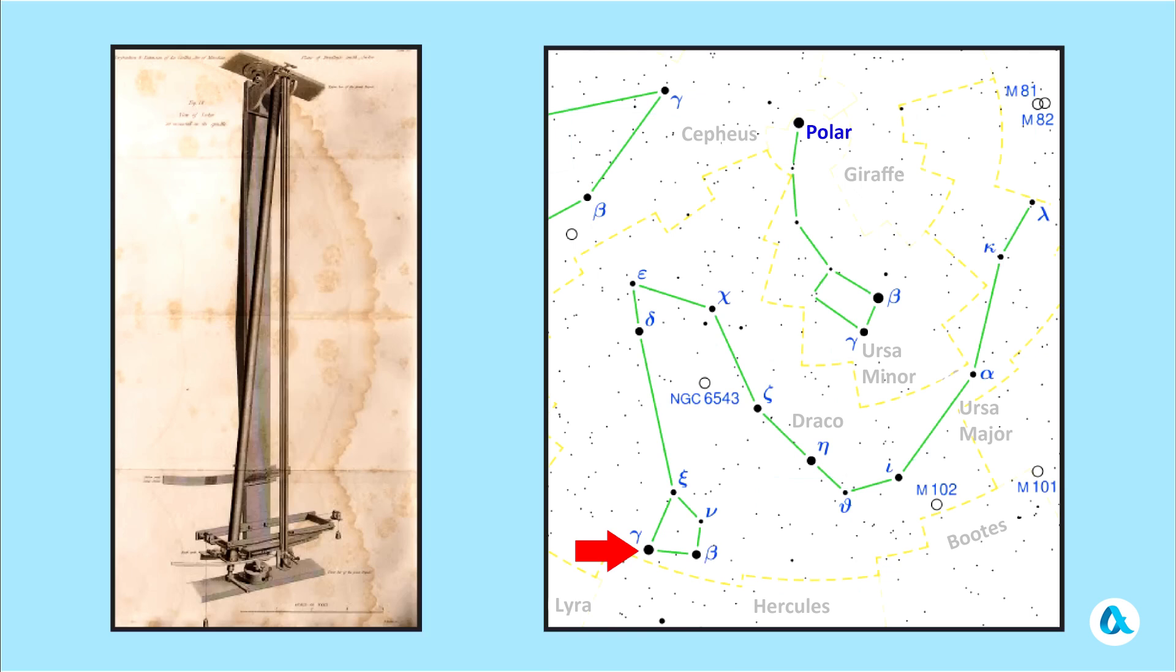And he discovered that throughout the year this star passes through the meridian, not in the same spot, but it makes peculiar oscillations to the north and south with an amplitude of 40 arc seconds.